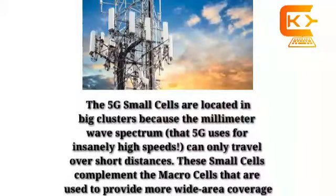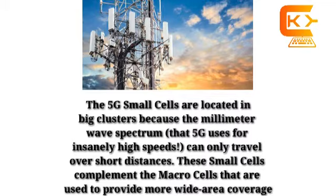The 5G small cells are located in big clusters because the millimeter wave spectrum that 5G uses for insanely high speeds can only travel over short distances. These small cells complement the macro cells that are used to provide more wide-area coverage.